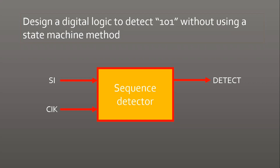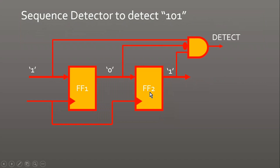The final logic circuit diagram of the sequence detector to detect 101 uses a serial input SI and a clock. After many clock cycles, if we receive the sequence 101 — let's say the nth bit is 1, n+1 is 0, and n+2 is 1 — once these three bits are aligned, I feed all three taps into an AND gate to form the detect flag.